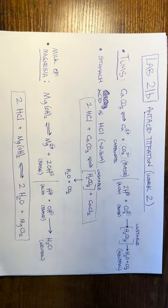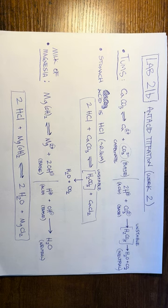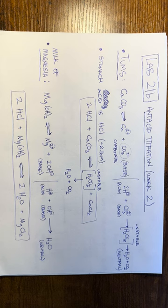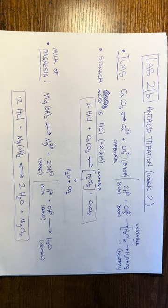This week we are going to finish up the lab from last week. We standardized NaOH and standardized HCl, and the point of that was for us to determine the amount of antacid in commercial products like Tums or milk of magnesia. This week we're going to use those standardized solutions to titrate our antacids, then do some math and figure out the amount of antacid in those products.